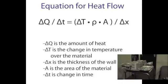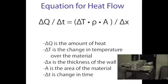The heat flow through the rebar can be calculated using the following equation. Where change in Q is the amount of heat that flows through the bar, and change in t is the change in time. Change in large T is the change in temperature over the material, and rho, or K, is the specific heat conductivity. A is the cross sectional area, and change in X is the change in distance or the depth of the material.